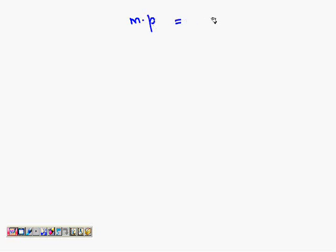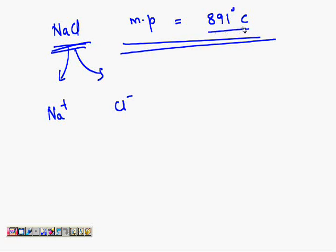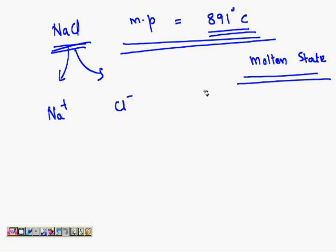But suppose you take it to a very high temperature — say its melting point. For sodium chloride the melting point is 891 degrees Celsius. At this temperature, the Na and Cl will get split up — Na⁺ will be freed from Cl⁻. The forces of attraction are overcome by supplying this high amount of energy. Na⁺ and Cl⁻ get split up and are free to move because they are converted into liquid state. This state is known as molten state — that is, the melted state.